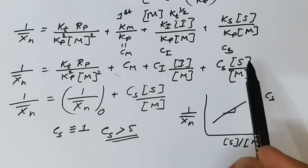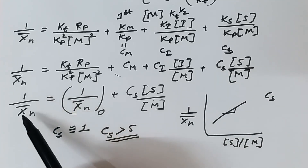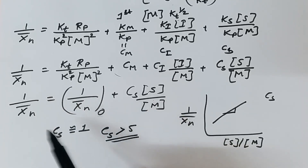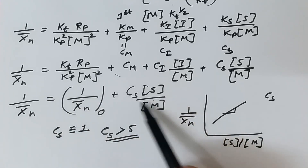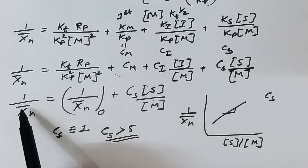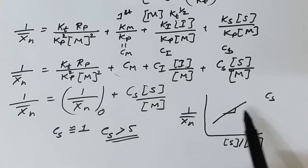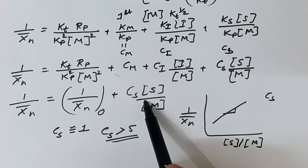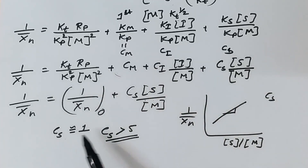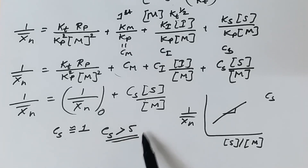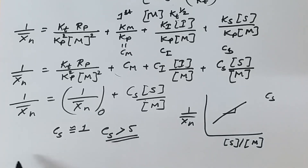Since transfers to monomer and initiator are very small, the only possibilities are termination by coupling — already covered in the previous lecture — or termination by transfer to the solvent. If transfer to solvent is occurring, we use this relationship: plotting 1/x̄n versus [S]/[M] experimentally, since concentrations and average degree of polymerization are known. The slope equals Cs. Solvents with Cs ≈ 1 are called regulators, meaning they regulate average molecular weight. If Cs > 5, they yield a low molecular weight polymer.